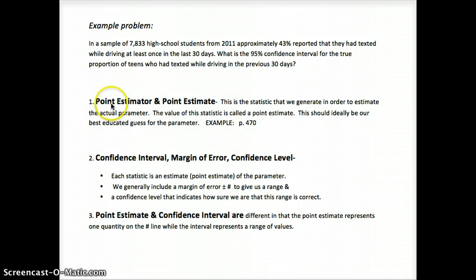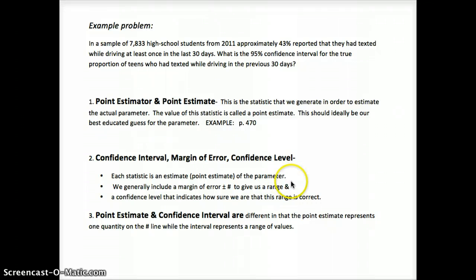Our estimate would be a range of values that we're confident the true value falls within. So our confidence interval is going to have a point estimate plus or minus the margin of error. We'll have p-hat plus or minus a certain range of values depending on the normal curve and depending on how confident we are — whether we're 95% confident or 99% confident. That confidence level relates to the percent of values under the normal curve, indicating how sure we are that this range is correct.